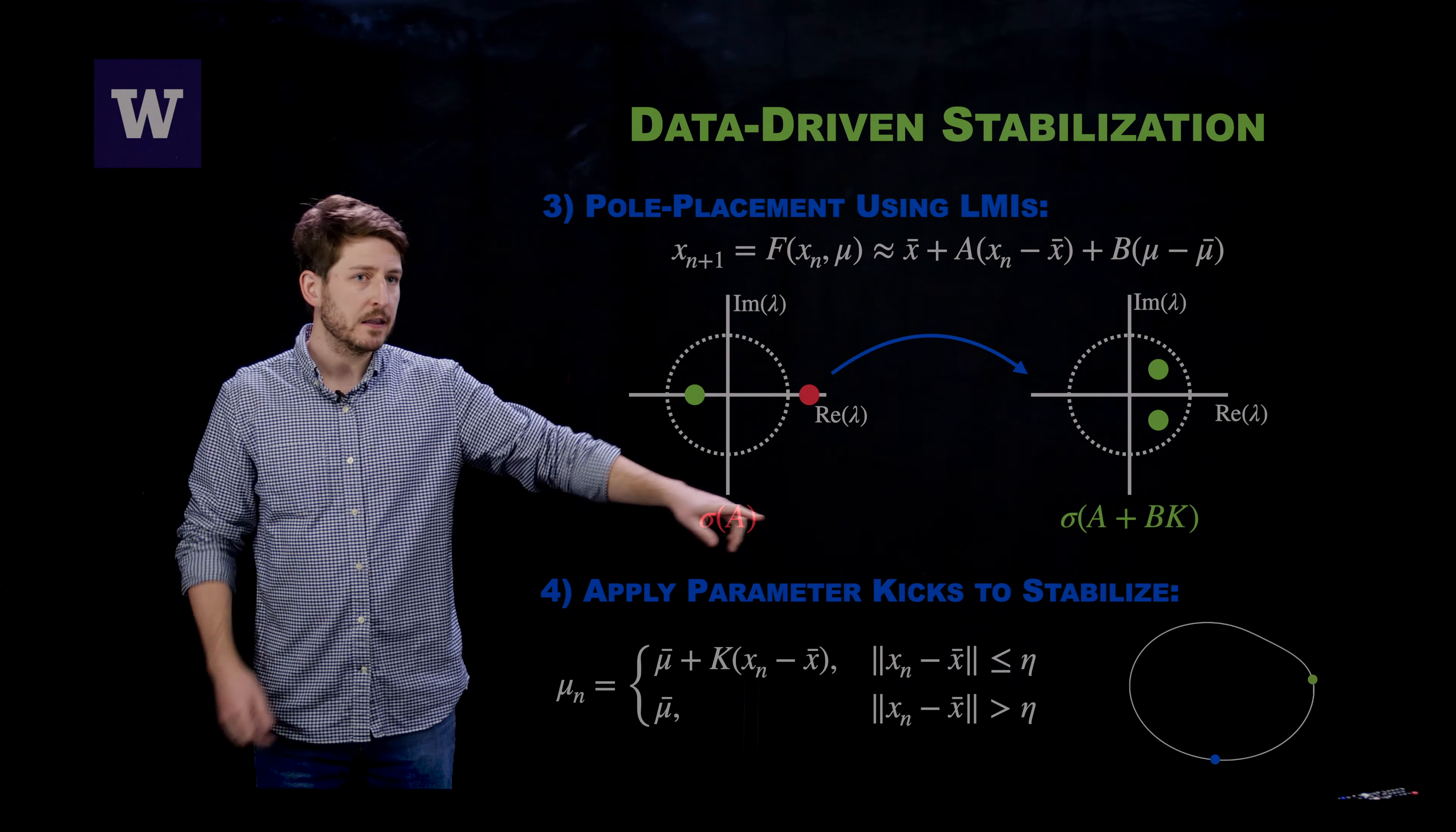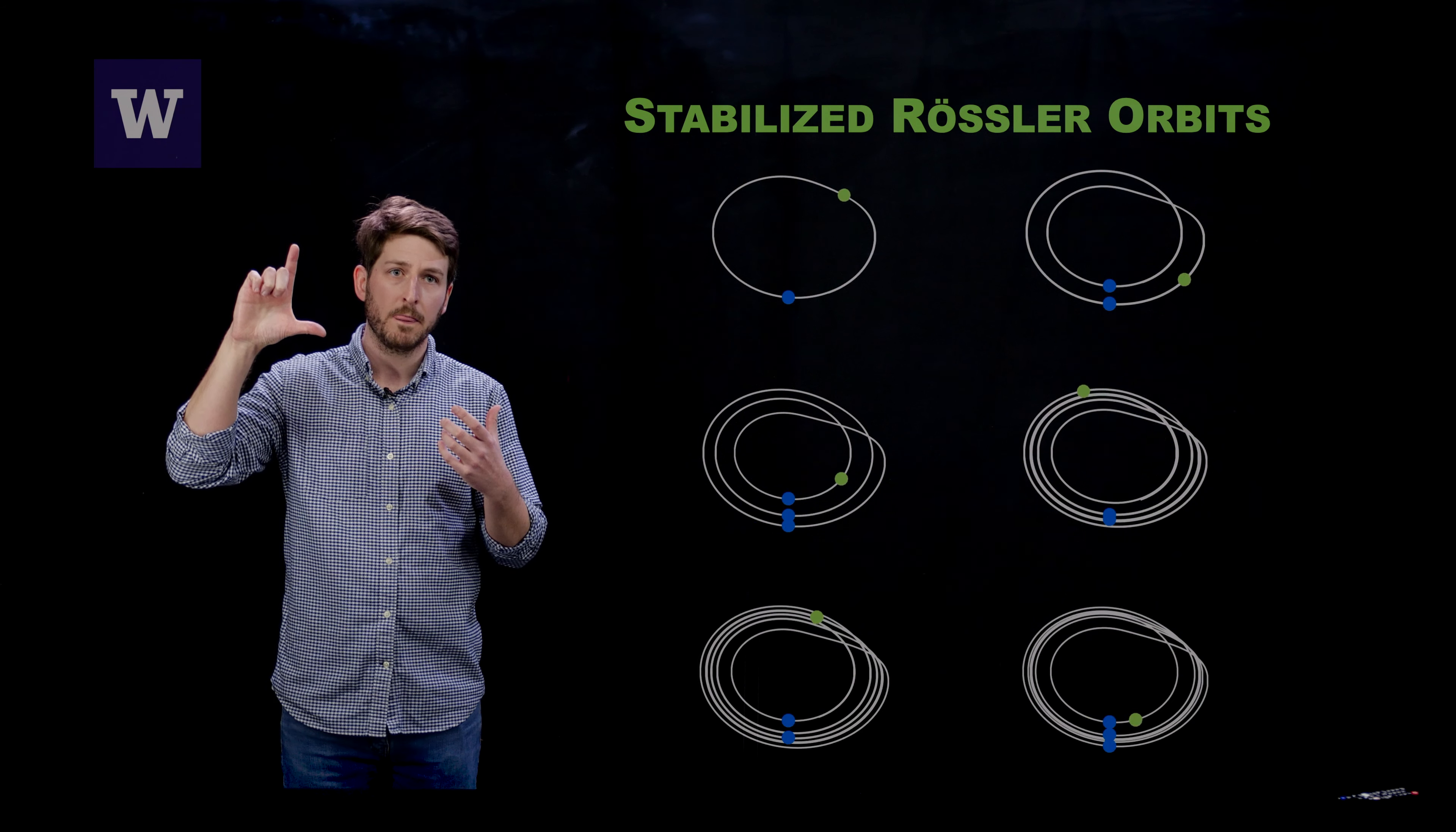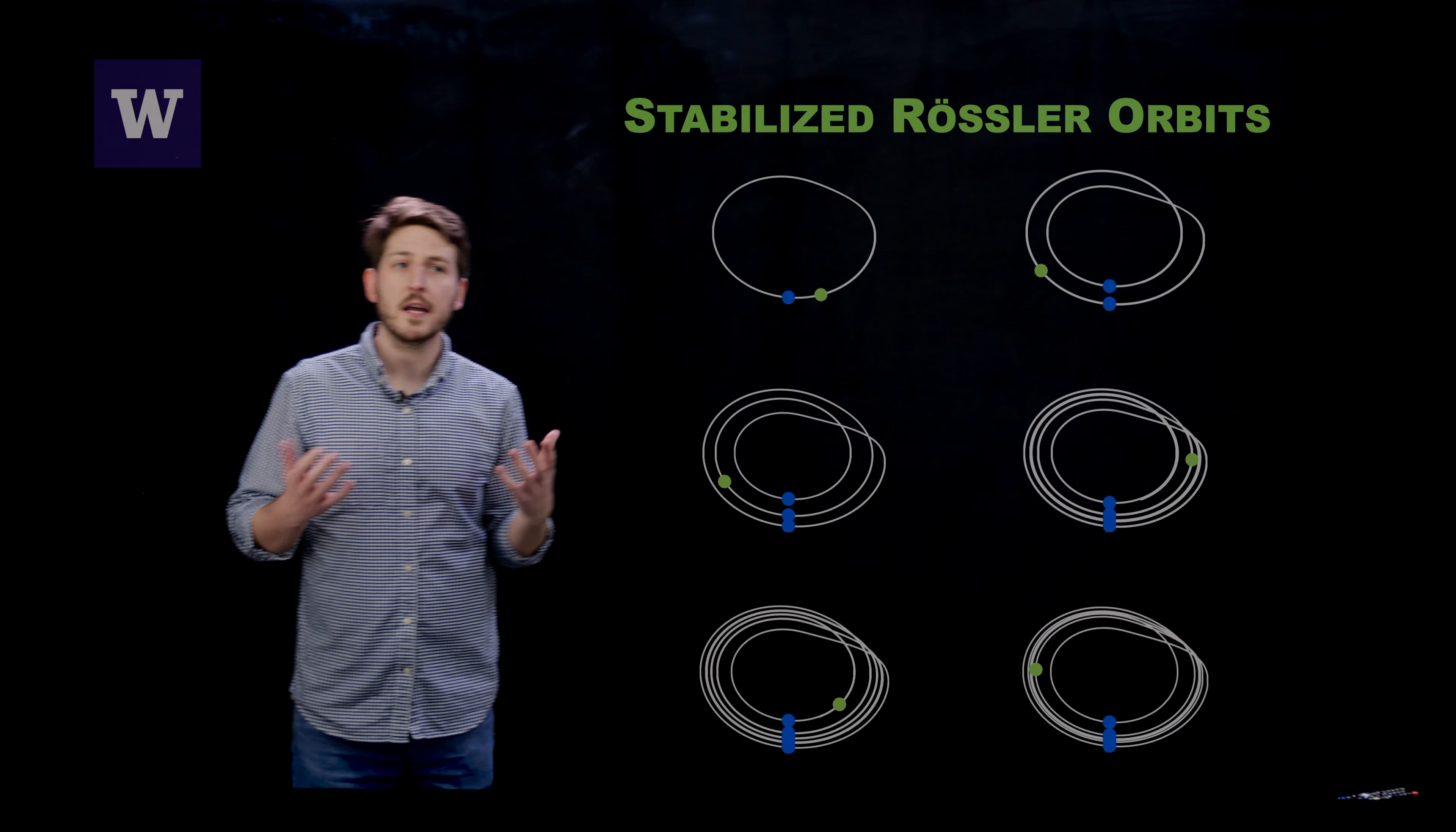Now to demonstrate the utility of this, I'm presenting to you projections of the three-dimensional Rossler system in just the XY coordinate plane, and what you can see here are six stabilized periodic orbits: we have a period-1 orbit, a period-2 orbit, 3, 4, 5, and 6, all stabilized in a quick and efficient manner using the methods that we propose in our work.